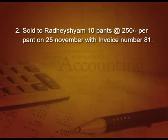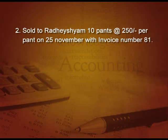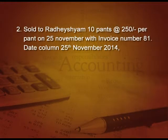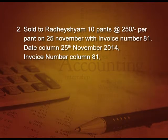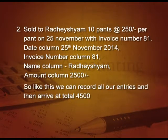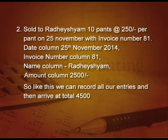Second transaction: sold to Radisham 10 pens at the rate of 250 per pen on 25th November, with invoice number 81. To record this: date column — 25th November 2014, invoice column — 81, name column — Radisham, amount column — 2500 because 10 into 250 is 2500. We can record all entries and arrive at the total. For these two transactions, our total will be 4500 rupees.